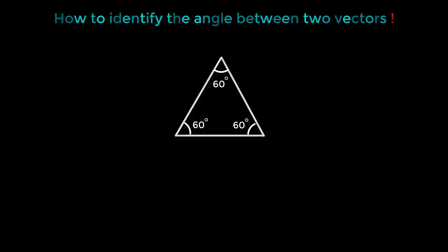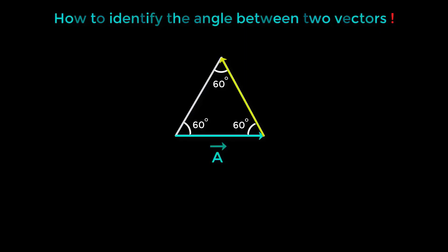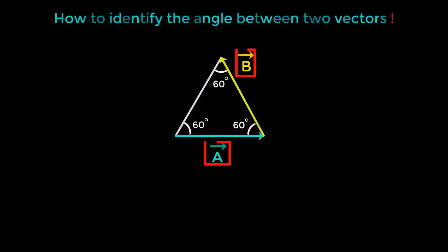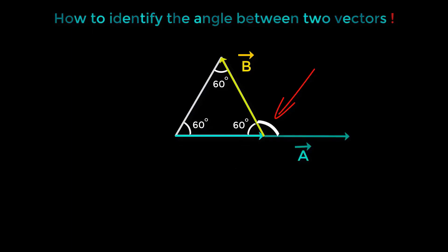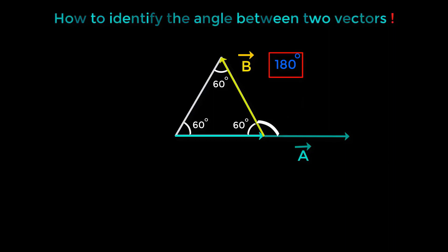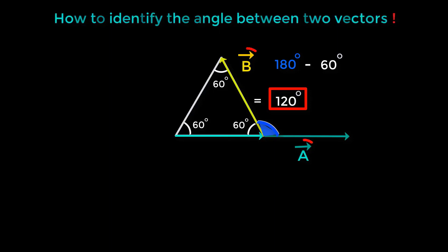Look at this equilateral triangle. These three sides are equal to each other, and all three internal angles are congruent and each equal 60 degrees. Think of this as vector A and this as vector B. This 60-degree angle is not the angle between these two vectors, as the vectors are not joined tail to tail. We will shift this vector from here to here. This is now a 180-degree angle. So 180 degrees minus 60 degrees equals 120 degrees, which is the angle between these two vectors.